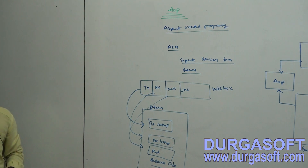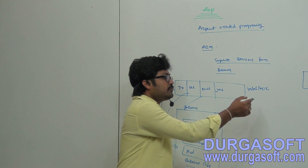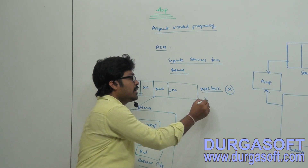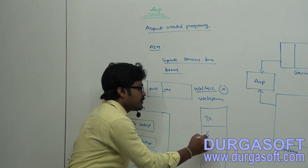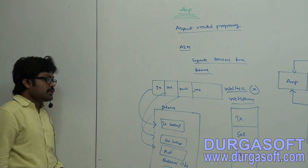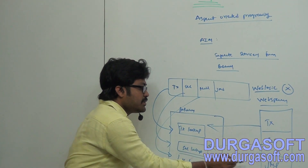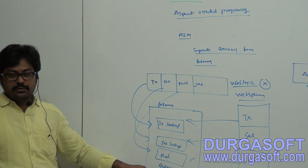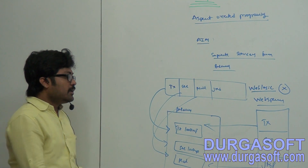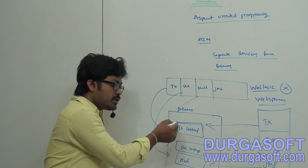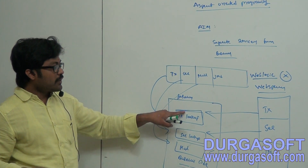You need to write all the services along with your business code. The problem with this code is: in future if you want to cancel the contract with WebLogic and go to WebSphere, you need to edit your business code. Instead of looking up WebLogic services, you need to look up WebSphere transactions, security, and JMS services. So your business code again you need to change. Whenever you require changes on services, those service changes may affect your business code.